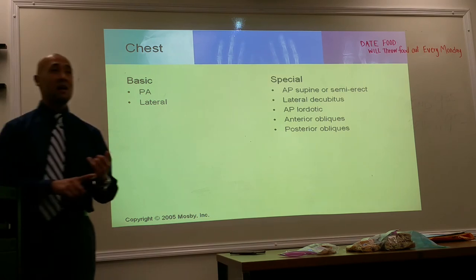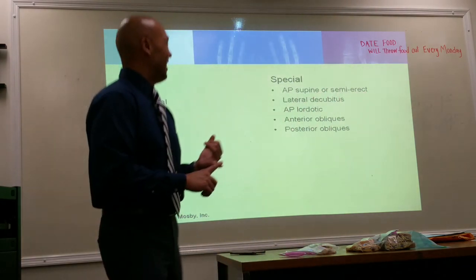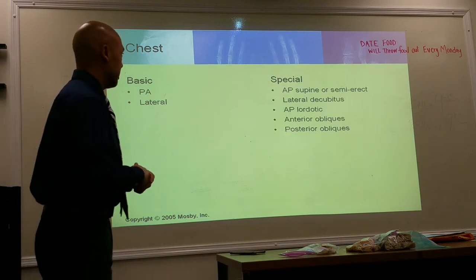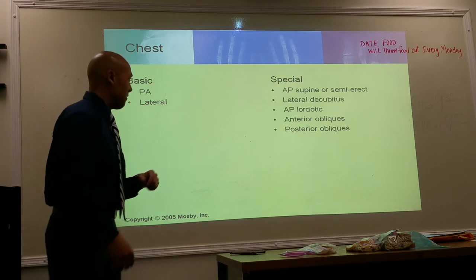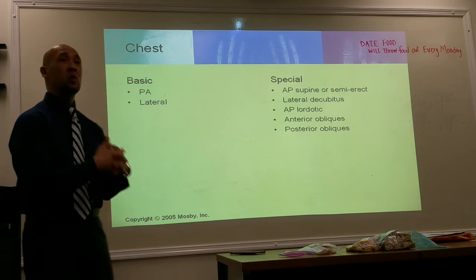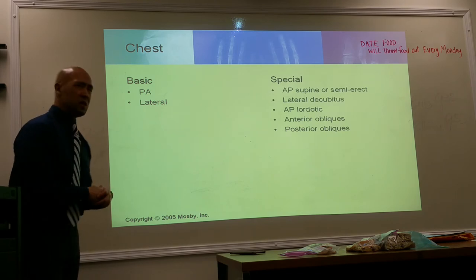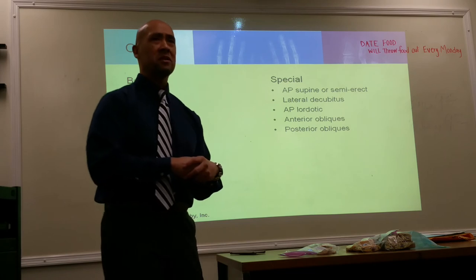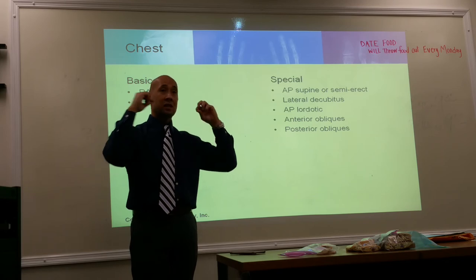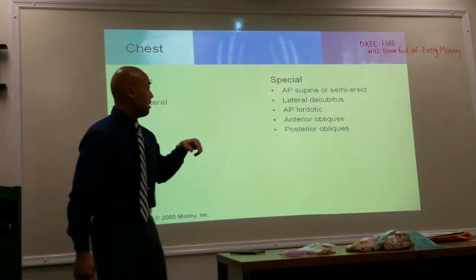Basic views for chest: we prefer PA. If you can't do PA, the alternative is AP, and then also a lateral — preferably in an upright position. Special views include AP supine or semi-erect, a lateral decubitus to evaluate air and fluid levels for patients who cannot stand, AP lordotic — to throw the clavicles over the apices to evaluate the apices, good for evaluating tuberculosis — and anterior and posterior obliques.